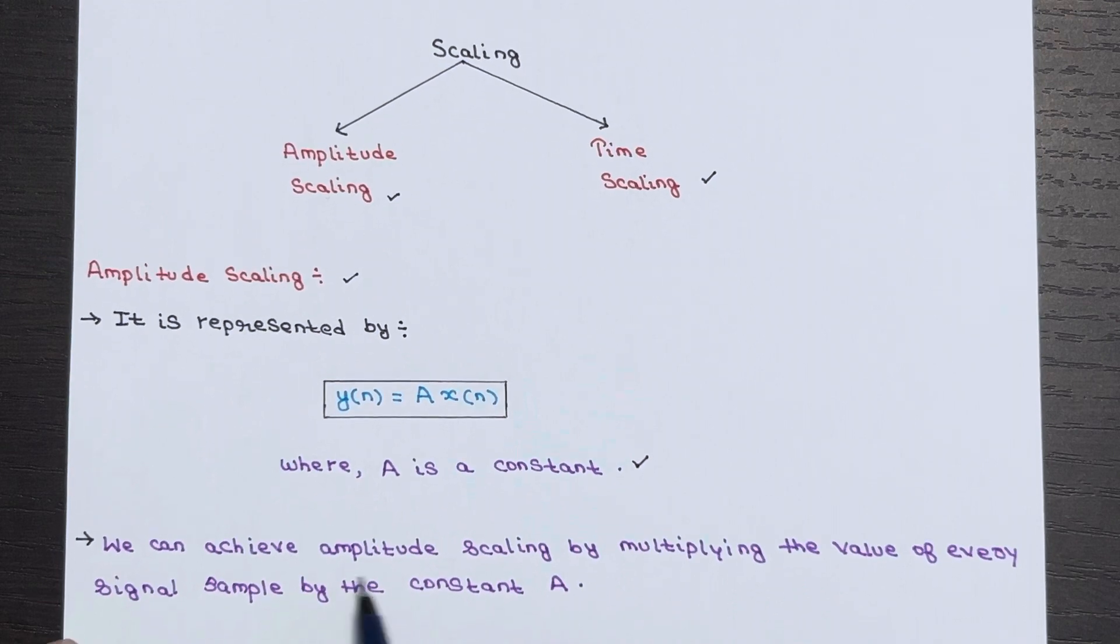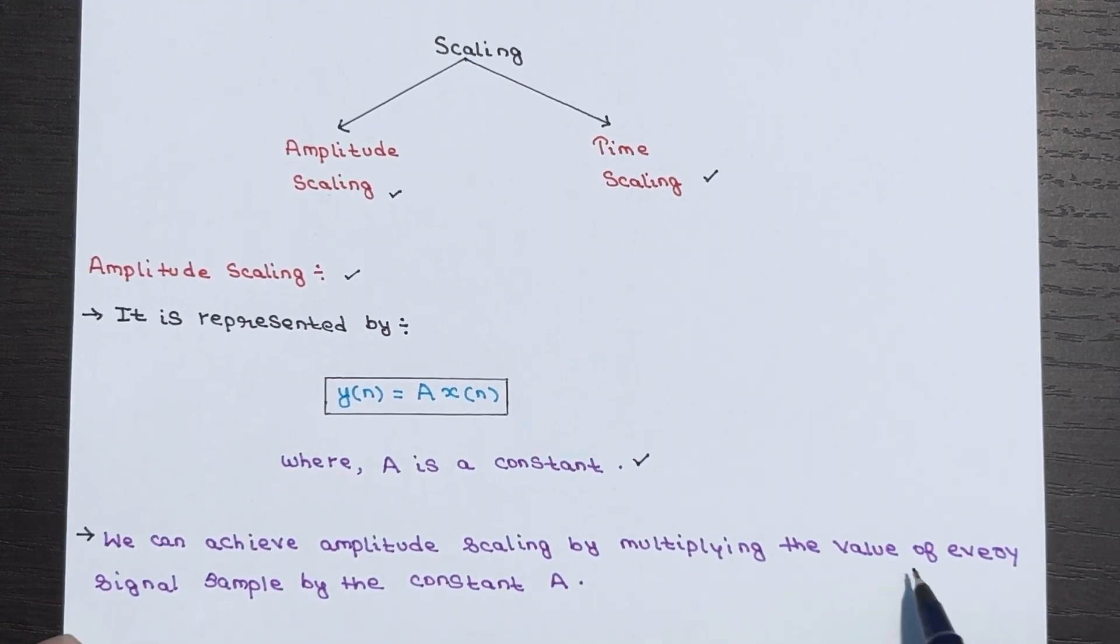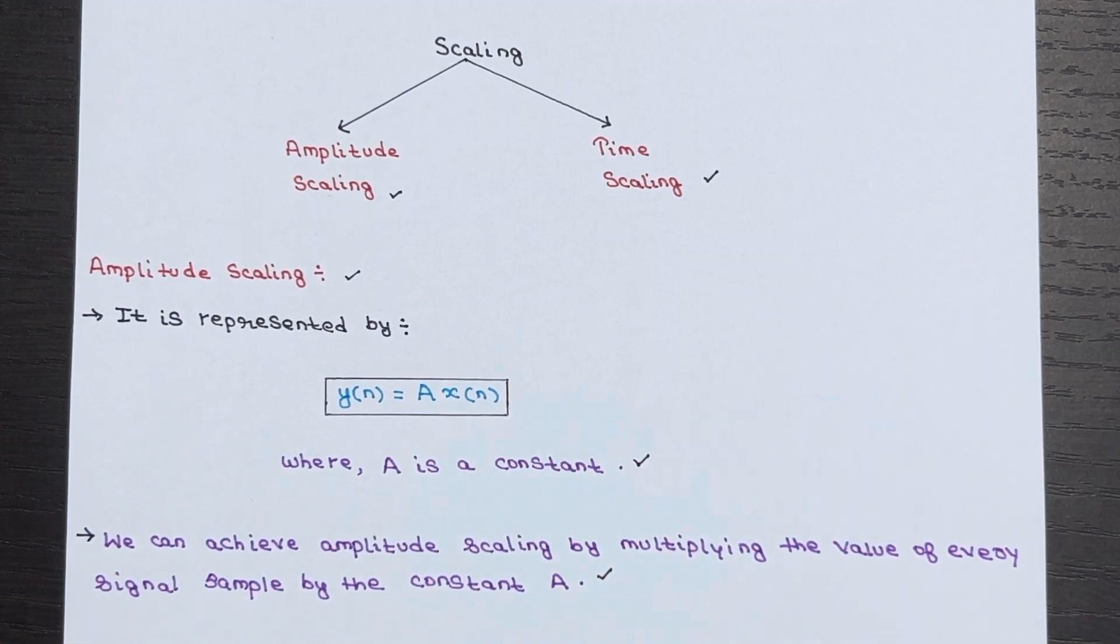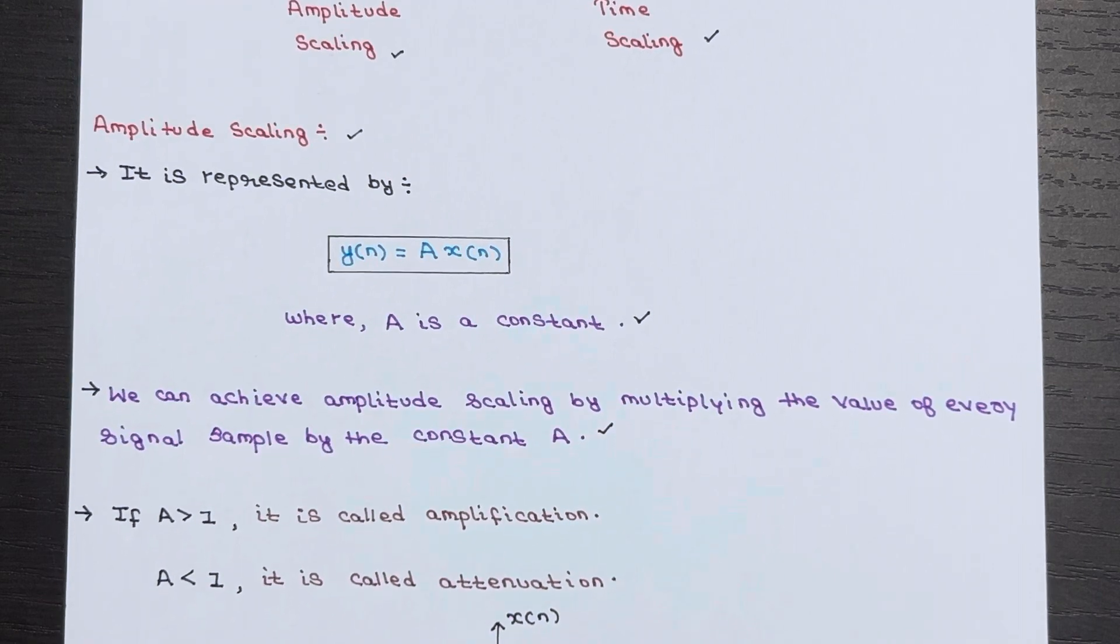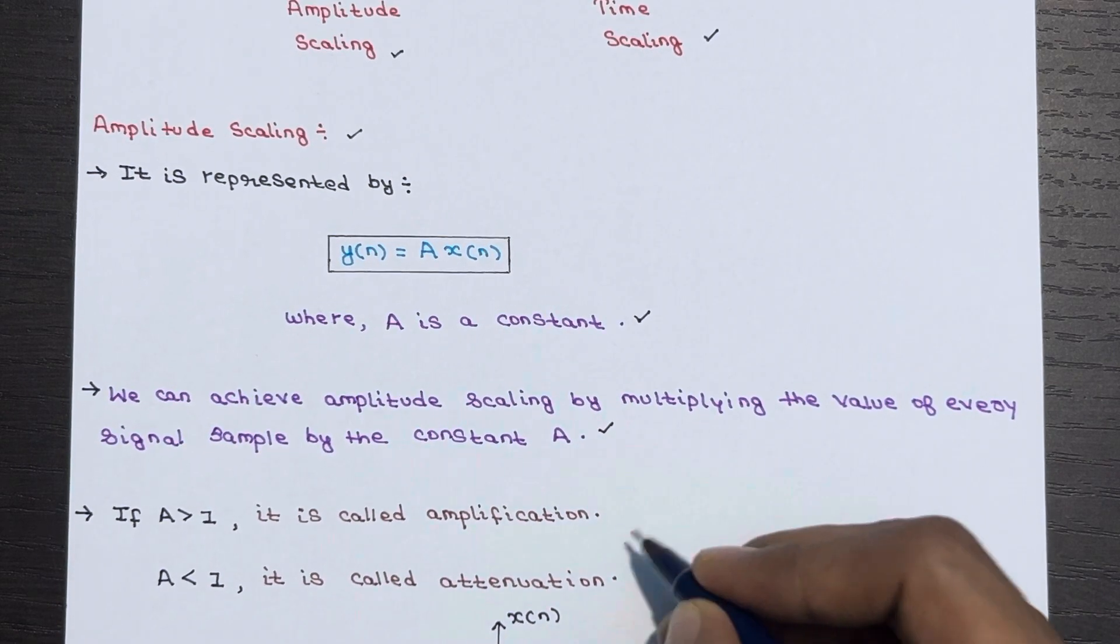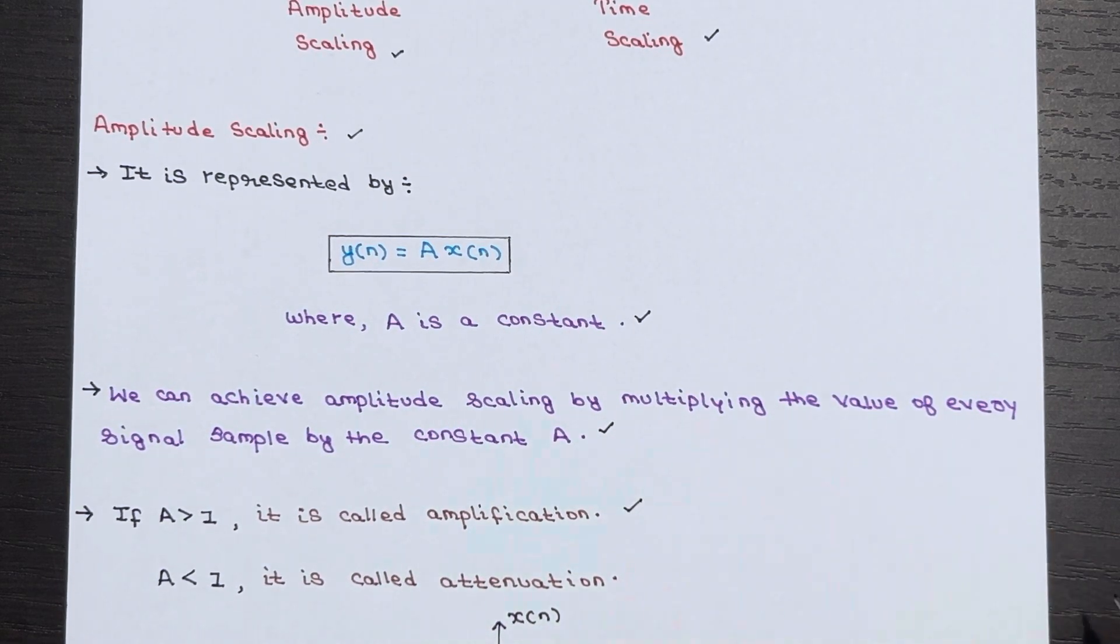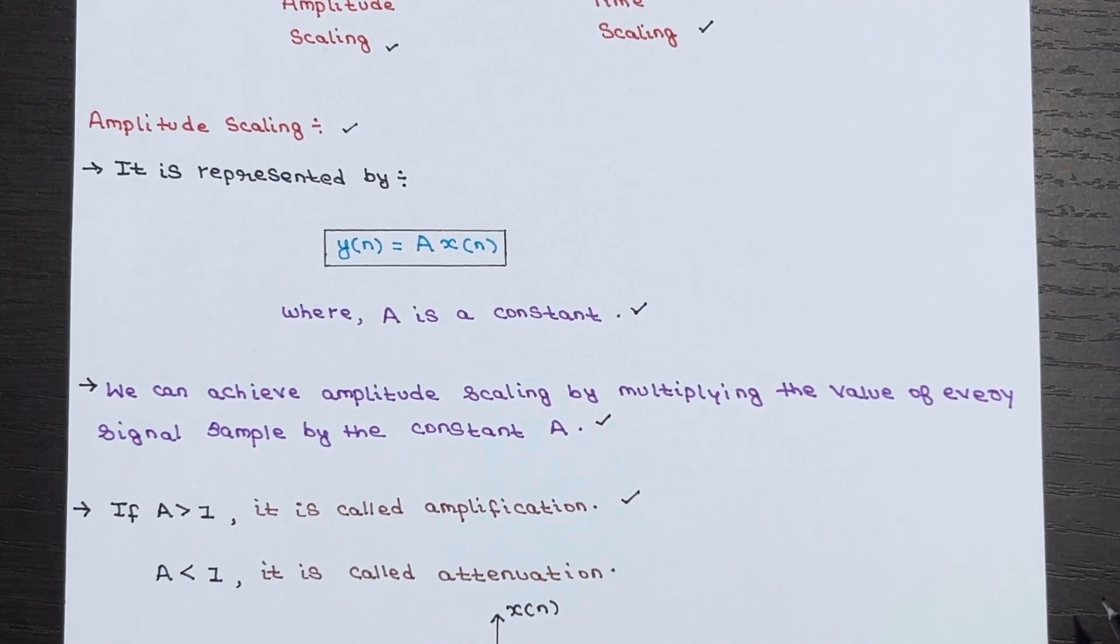We achieve amplitude scaling by multiplying each signal sample by the constant A. If A > 1, it's called amplification. If A < 1, it's called attenuation.